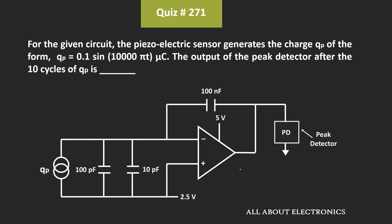In this question, we have been given this op-amp circuit and here we have been given that one piezoelectric sensor generates a charge Qp which can be given by this expression. We have been asked to find the output of the peak detector after the 10 charge cycles.